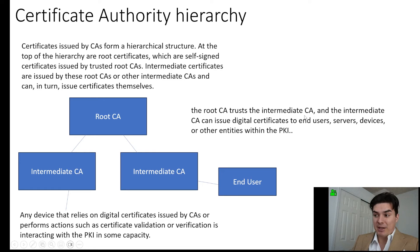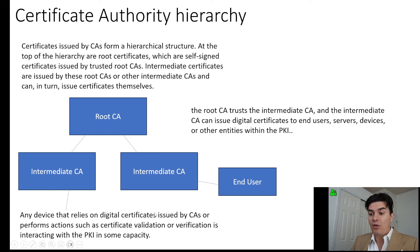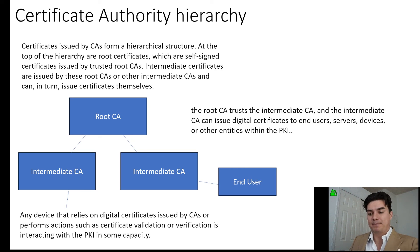The root certificate trusts the intermediate certificate authorities, and the intermediate certificate authorities can issue digital certificates to end users, servers, devices, or other entities within the public key infrastructure. Any device that relies on a digital certificate or performs actions with certificates — validation or verification — is interacting with the public key infrastructure in some way.